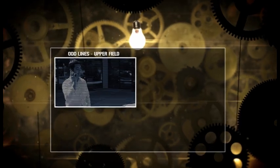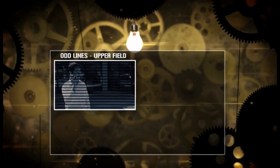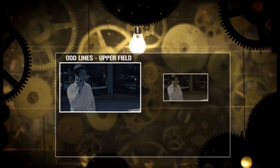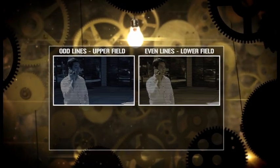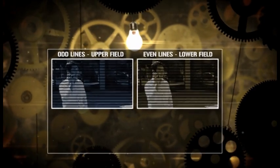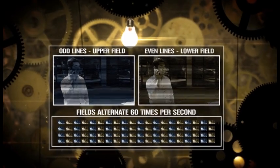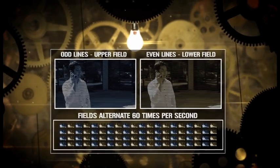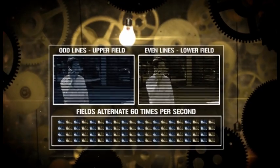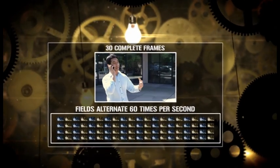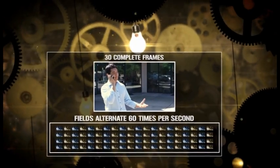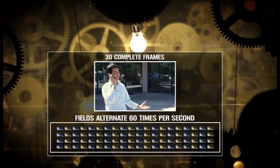One field contains the odd lines of an image, known as the upper field, and the other contains the even lines, known as the lower field. The odd and even fields alternate 60 times every second, which is fast enough to form what's perceived by viewers as 30 complete frames.